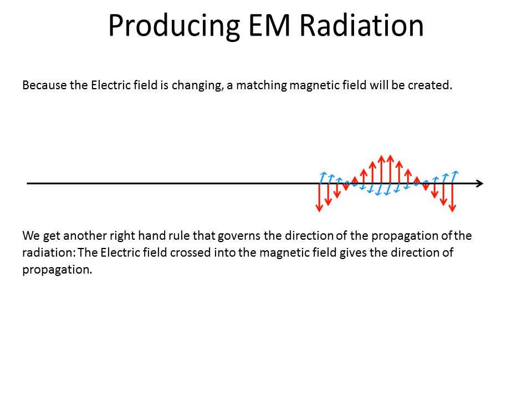This brings up a new right-hand rule that tells us which way the radiation propagates if we know the electric and magnetic fields. If you point your index finger in the direction of the electric field E and your second finger in the direction of the magnetic field B — so E is finger one, B is finger two — your thumb points in the direction the radiation propagates. In more advanced physics this is called the Poynting vector, and it's simply E cross B.